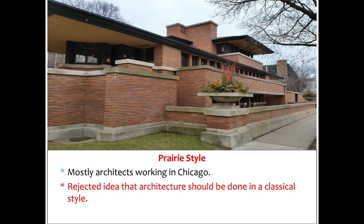Wright used cantilever construction to have porches and large terraces extend from the main section of the structure. Cantilevers give the impression of forms hovering over open space, held up seemingly by weightless anchors bolted into the rear end of the cantilever, allowing a portion of the floor to hang over open space. He was able to do this through the use of iron and steel construction.